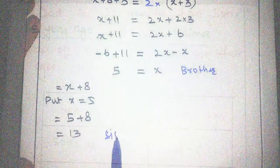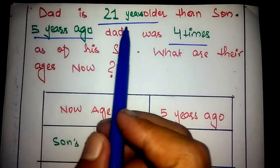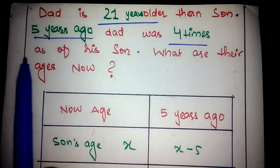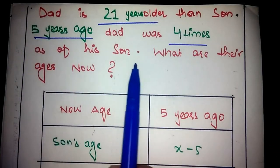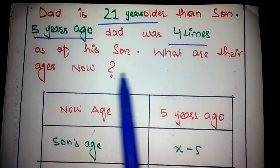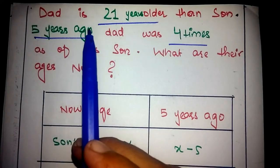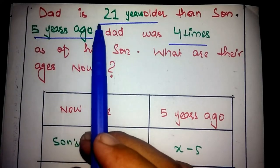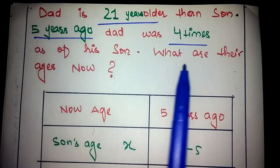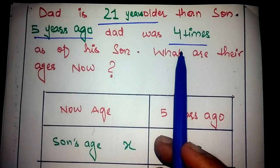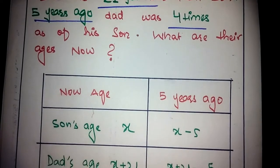The next age problem: dad is 21 years older than his son; 5 years ago, dad was 4 times the age of his son — what are their ages now? The important points are: 21 years older, 5 years ago, and 4 times.